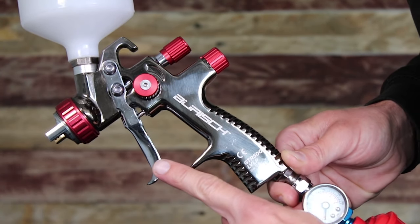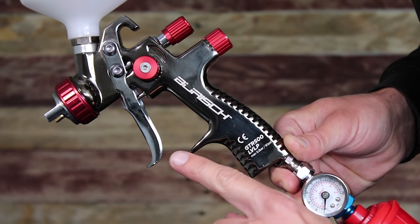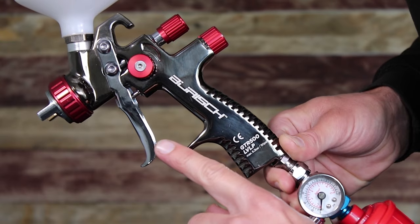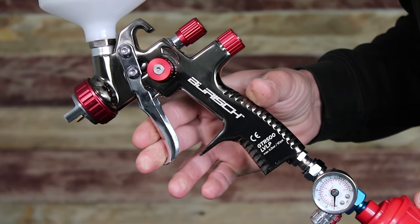The trigger allows you to control the flow of paint out of the gun. The GTR 500 has a two-stage trigger. If you press down on the trigger gently until you feel resistance, it will only let air out of the air cap.